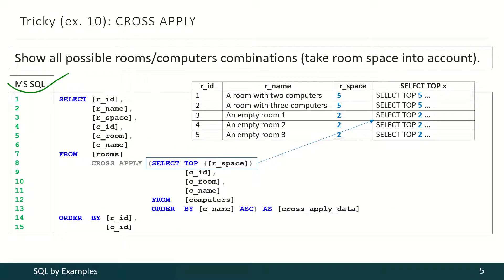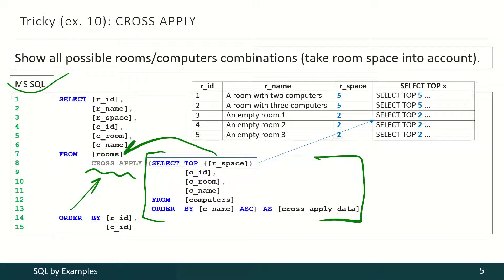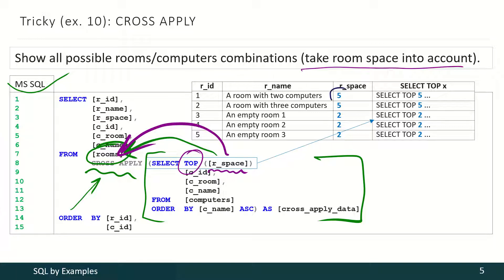With Microsoft SQL Server the solution is simpler, because it supports cross-apply. So what does cross-apply do? It allows us to reference from this part of the query some information from this part of the query, from this table. And now, to take room space into account, we only have to use this top syntax, and we get the information about room space from here. The information about room space goes into the top syntax. And that's how we achieve the final result.